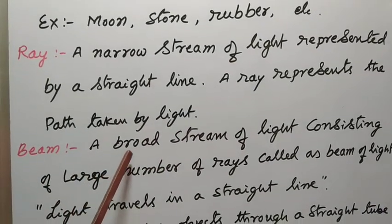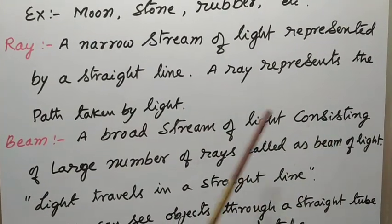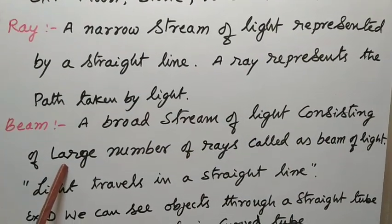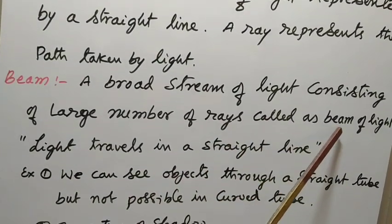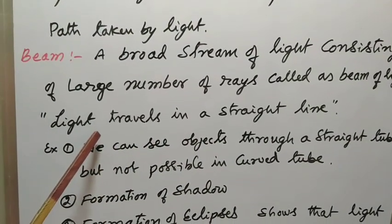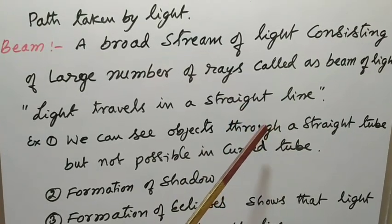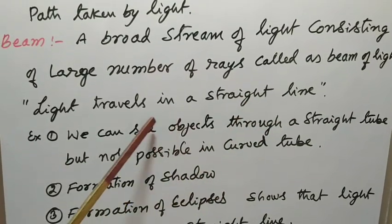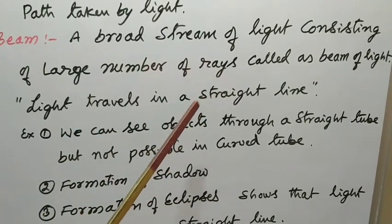A broad stream of light consisting of a large number of rays is called a beam of light. We know that light travels in a straight line. We can give examples for this.